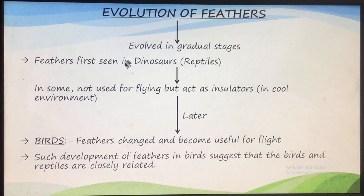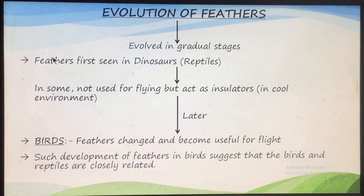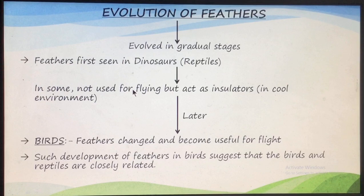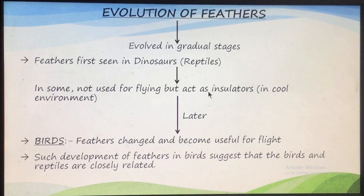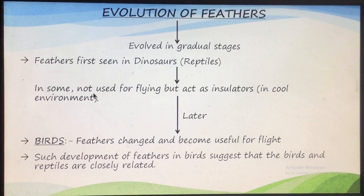Another good example showing that evolution has taken place gradually in stages involves dinosaurs. Dinosaurs are reptiles, and feathers were present in dinosaurs, but these feathers were not used for flying. The feathers present on the body of dinosaurs living in a very cold environment were actually used as insulators to keep their body warm. Later on, these feathers were made useful by the birds for flight.